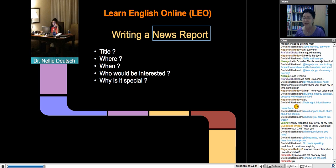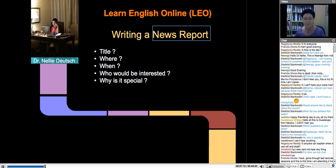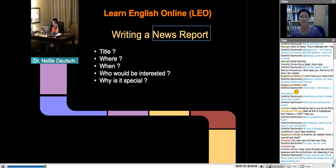And then who would be interested in reading your article? Okay. Would it be people from Jamaica? Would it be people who are interested in sports people? People who are interested in learning English? Okay. So who is your audience going to be? Okay. And why is it special? Why did you choose this article? What made this report special? Okay. Why is this news report that you're writing about special?